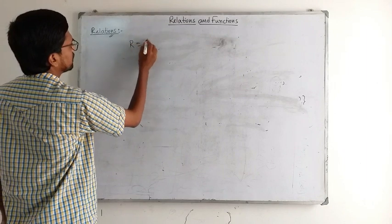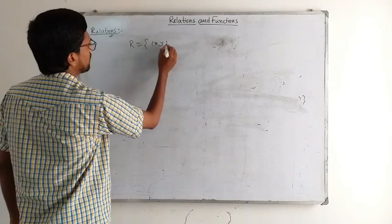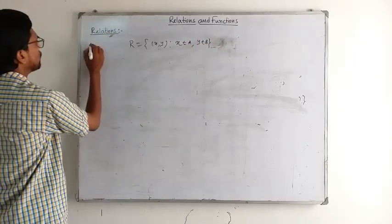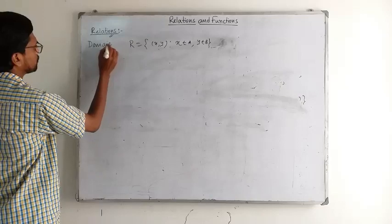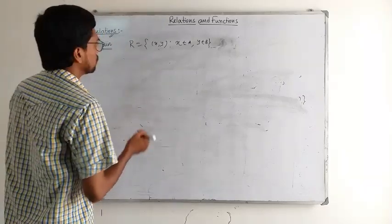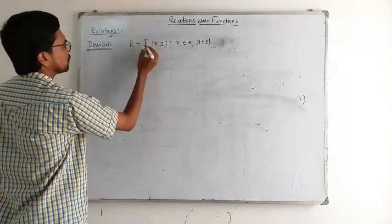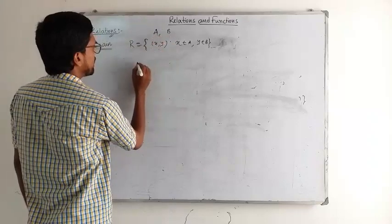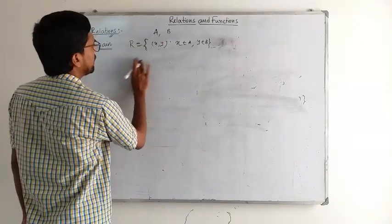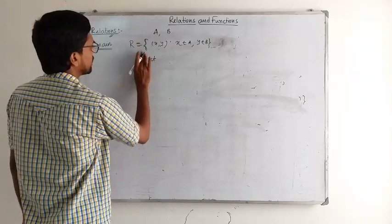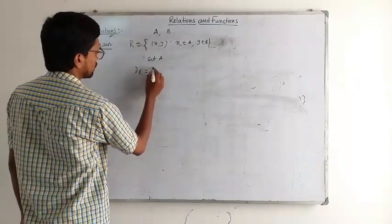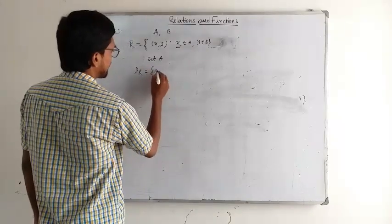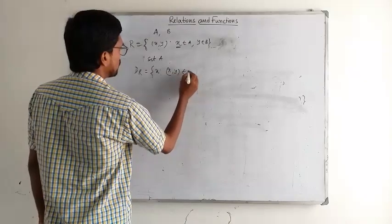The relation R is defined as the set of pairs (x, y) such that x belongs to A and y belongs to B, where A is the domain of R. The domain of R is the set of all x such that (x, y) belongs to R.